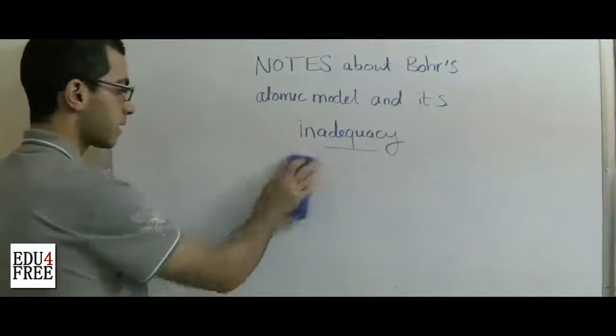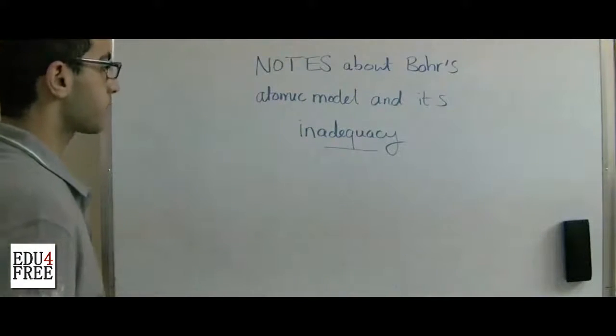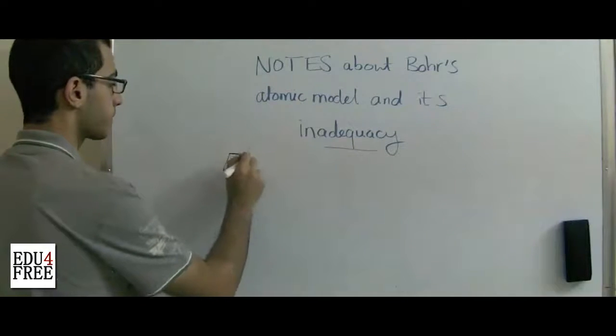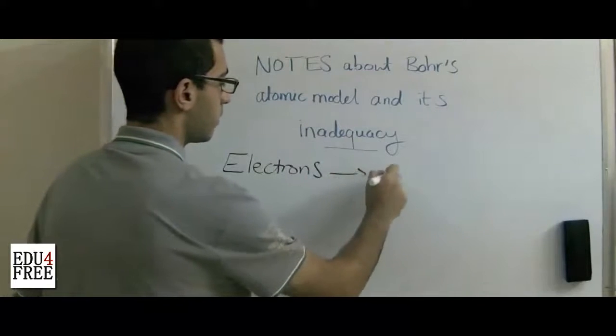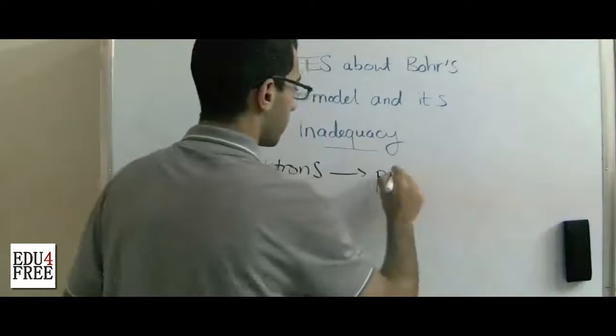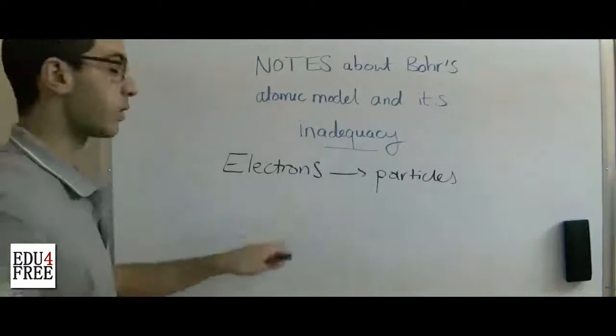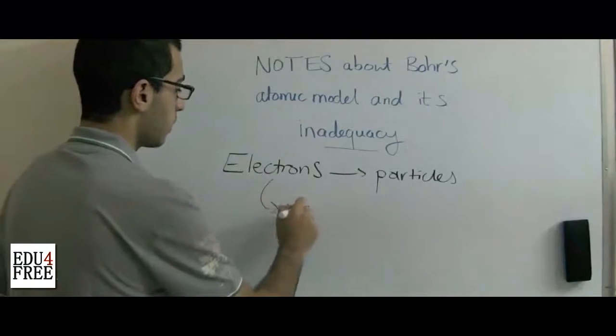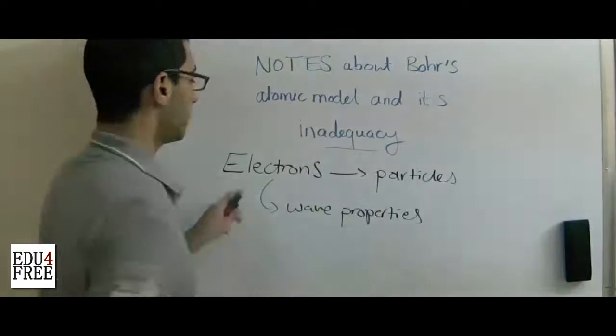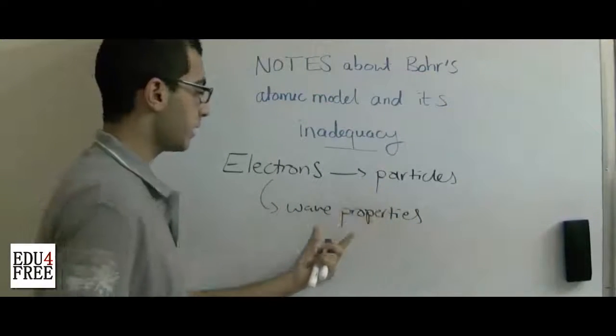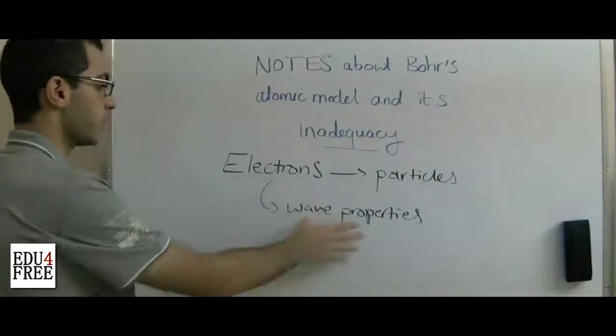Also, during his study Bohr studied the electrons as particles and he didn't study the electrons with their wave properties. So the electron is a particle, but it has some wave properties. He ignored these. He didn't study the electrons based on these.